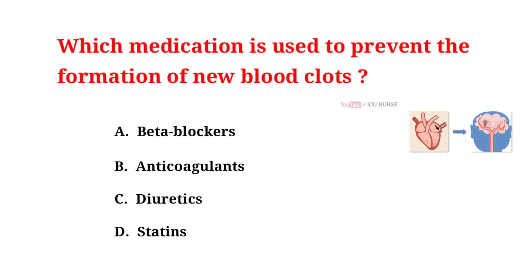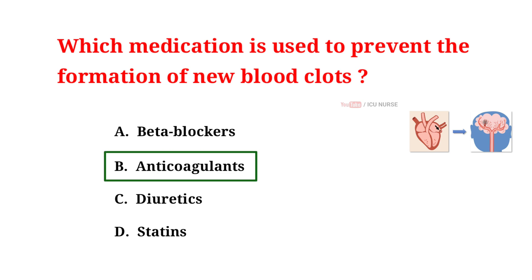Which medication is used to prevent the formation of new blood clots? A. Beta blockers. B. Anticoagulants. C. Diuretics. D. Statins. And the correct answer is B. Anticoagulants.